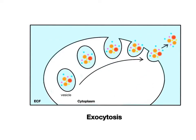A second type of vesicular transport is exocytosis, which is the opposite of endocytosis, where chemicals are released out of the cell. The prefix exo means exiting out of. In this process, vesicles formed inside the cell export chemicals out into the ECF. The internal vesicle fuses with the cell membrane, which opens up a pore that allows the chemicals to be released into the ECF.